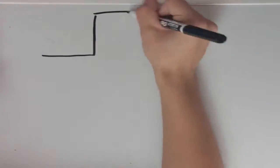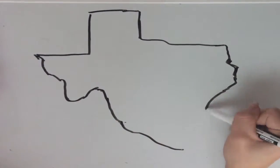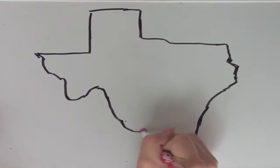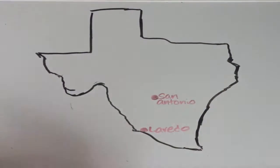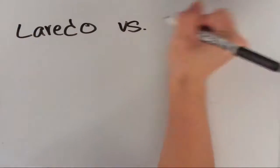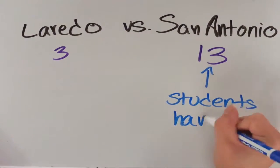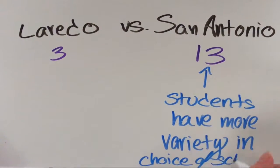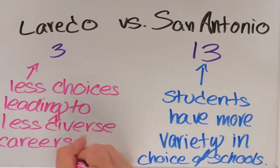Think of it this way. In the state of Texas, there are many cities with institutions of higher learning. Let's take a look at a couple of these cities. Let's look at San Antonio first. It has 13 institutions of higher learning, which means students have more variety when it comes to choosing which school to attend. Now let's look at Laredo. It only has three institutions of higher learning, meaning there is less diversity in institutions of higher education to attend.